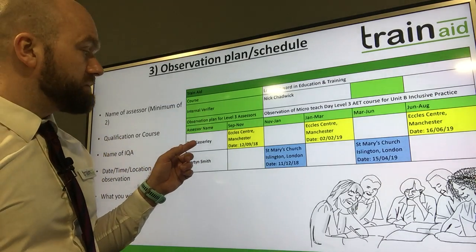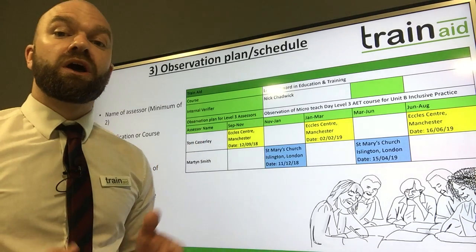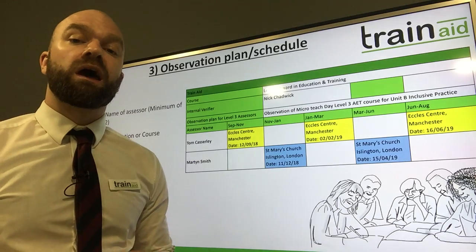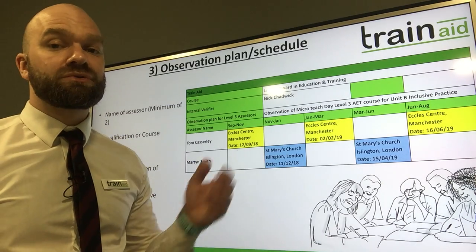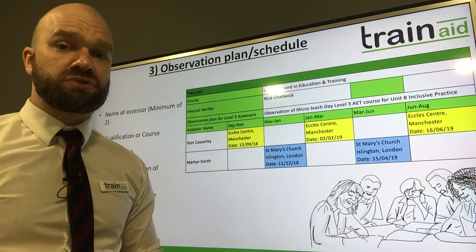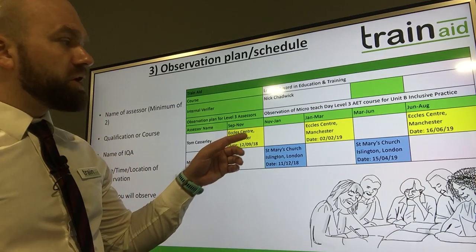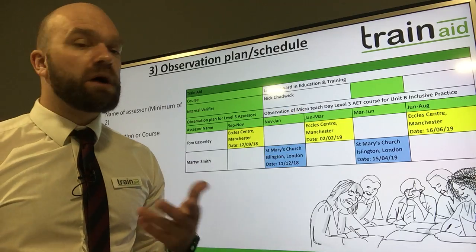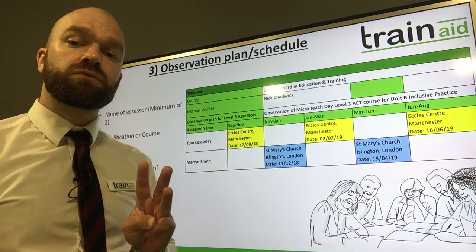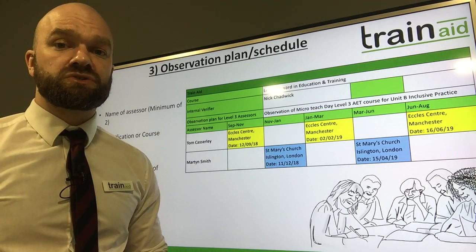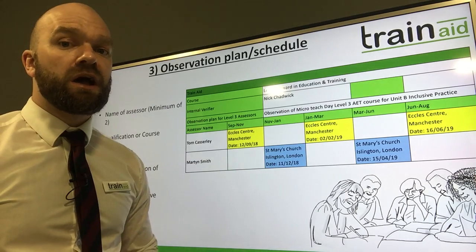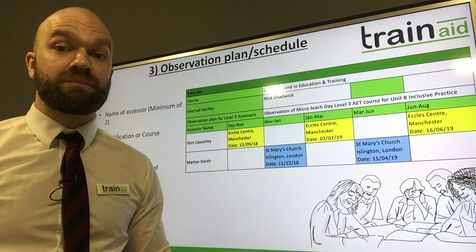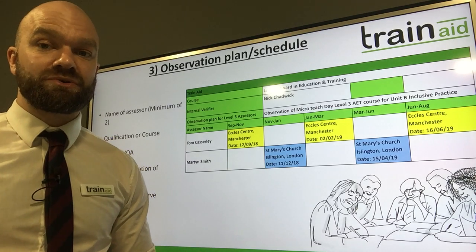Here we have Tom who is based in Manchester and we also have my colleague Martin who is based in London, and they are going to be delivering on our Level 3 Award in Education and Training. On the observation plan, the topic is the observation of our Micro Teach Day. This is Day 3 of the Level 3 Award in Education and Training, and for this example I will be observing both Tom and Martin delivering feedback to learners on the course.